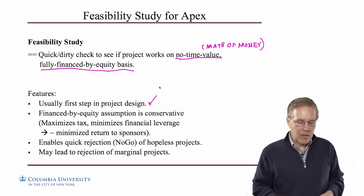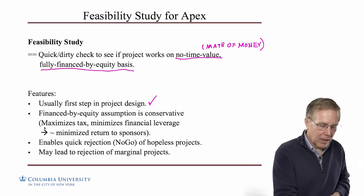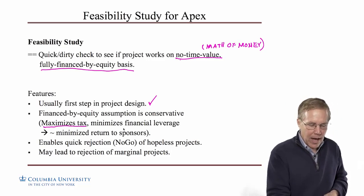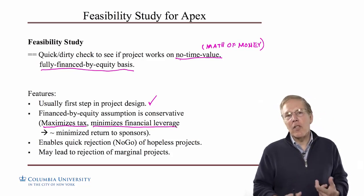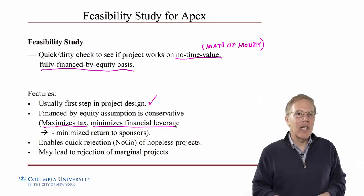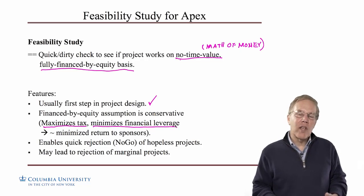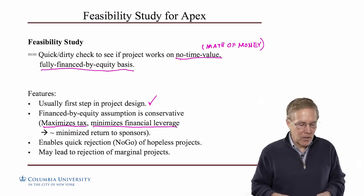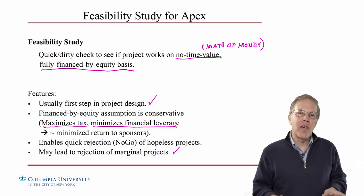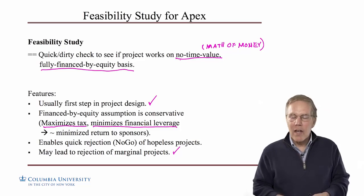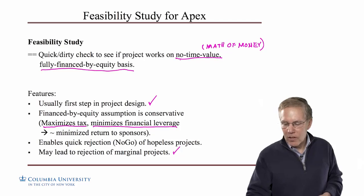Why is it our first step? It's because this finance-by-equity-only assumption is very conservative. It maximizes your taxes generally and minimizes our financial leverage — that's the increased return we get out of a project by taking out some loans to help execute it. So if the feasibility study passes this test, it's going to look even better when we start putting in some leverage. And if it doesn't pass this test, there's no hope for it. So it's a very good way to quickly reject non-viable projects.